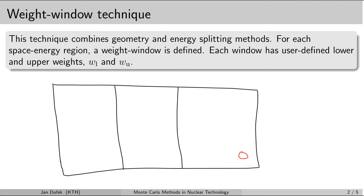The weight window technique is trying to solve this problem — it applies itself to all neutron histories, even those which are not crossing the boundaries between different segments. For instance, when a fission neutron is born in the most important part of the system, it will immediately be split into a number of neutron histories. Eventually that part of the system will be filled with many neutron histories, but none of the histories will have a large statistical weight. On the contrary, there will not be many neutron histories in the least important parts of the system, but those that are simulated there would have a relatively large statistical weight because those histories would not be split.